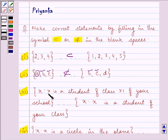X such that X is a student of class 11 of your school. X such that X is a student of your class. Your school has N number of students, but your class has a limited number of students. All the students of class 11 are not in your class, so we will say that it is not a subset of the other set.